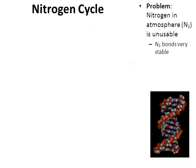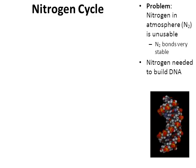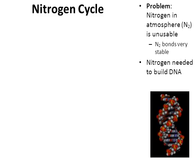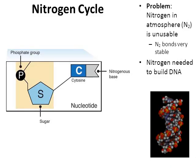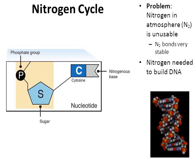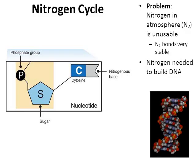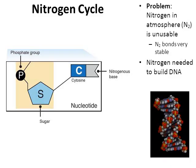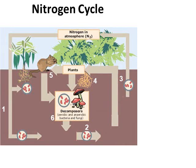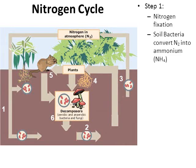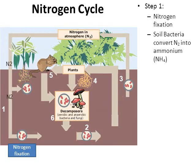Why do we need nitrogen? Nitrogen is one of the building blocks of DNA. DNA is made up of four nitrogen bases — A, T, C, G: adenine, thymine, cytosine, and guanine — and they all have nitrogen in them. In the nitrogen cycle, area one shows soil bacteria that use N2 from the air. Through a process called nitrogen fixation, they convert N2 into NH4, called ammonium.